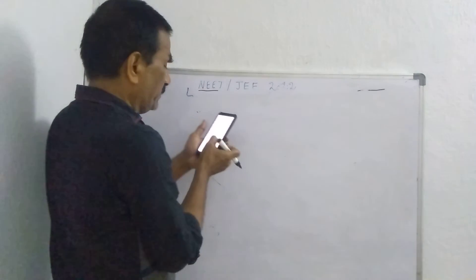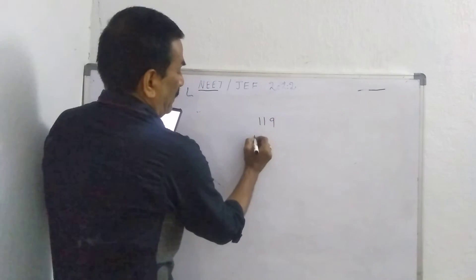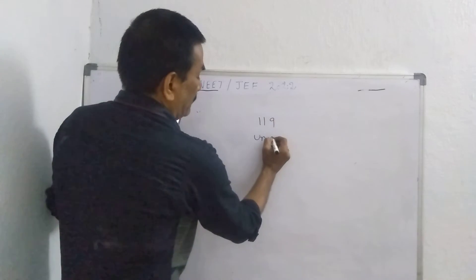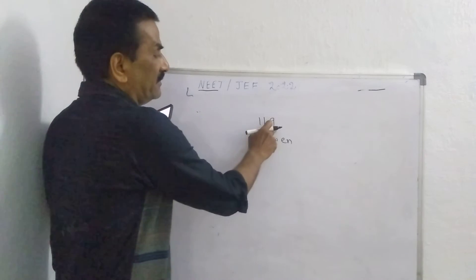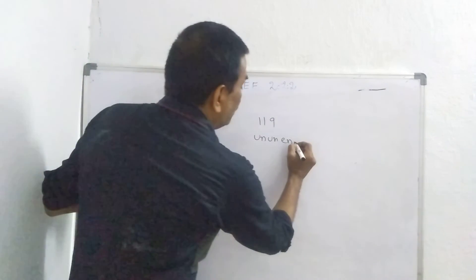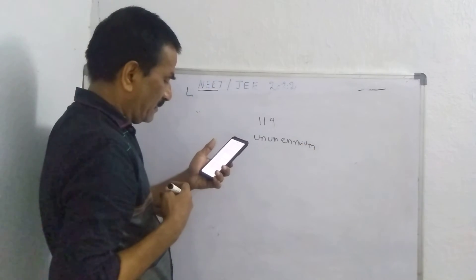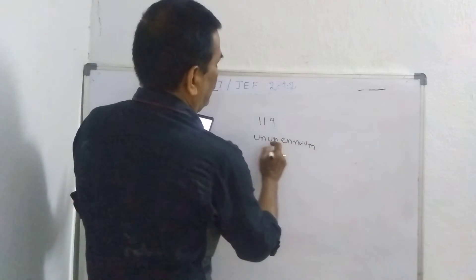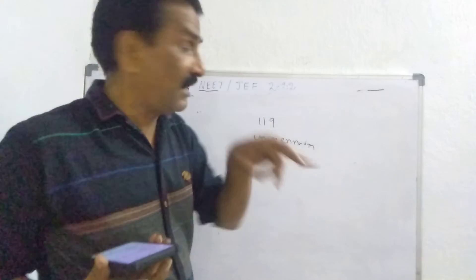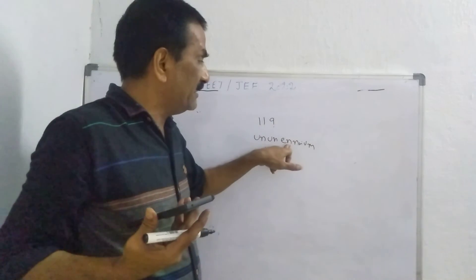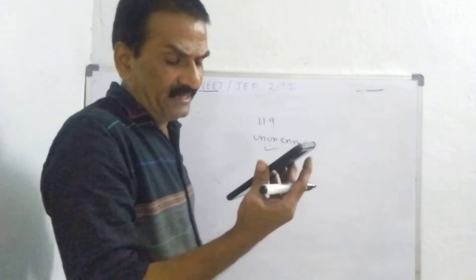How do you name the element with atomic number 119? Ununennium is the right answer. So that is the IUPAC name of atomic number 119. One means Un, another one means Un. This is nothing but En, Enium. So 119 means Un, Un, Enium is the right answer.